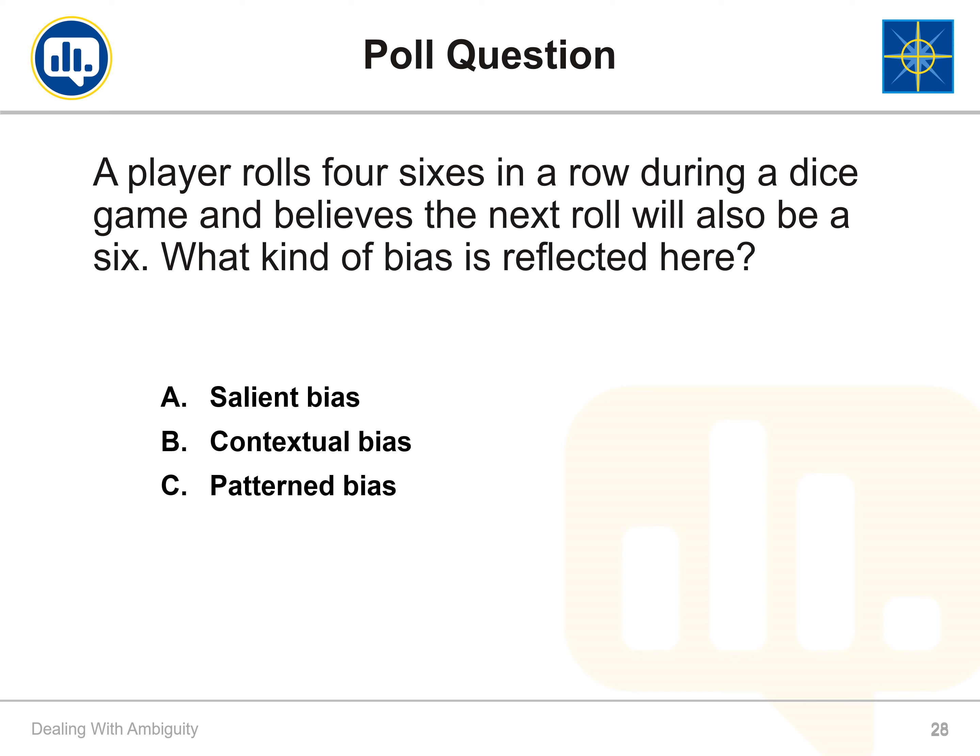Here's a scenario to evaluate. A player rolls four sixes in a row during a dice game and believes the next roll will also be a six. What kind of bias is reflected here — salient bias, contextual bias, or patterned bias? The right answer is patterned bias. Even though sixes were rolled each time previously, those results were completely random. There is actually no way one can predict if this pattern will be repeated.